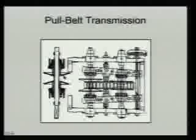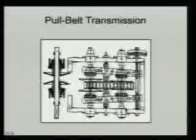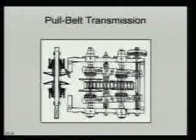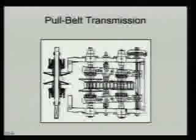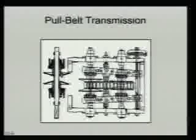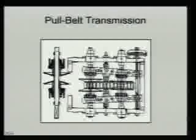If the belt is a defined thickness — one unit wide — and I move those two pulley halves apart, the belt will effectively move down. As the pulleys come apart, the belt, being the same thickness, has to slide down. If I push the pulleys closer together, the belt is going to have to move up, the diameter gets bigger, and the ratio changes.